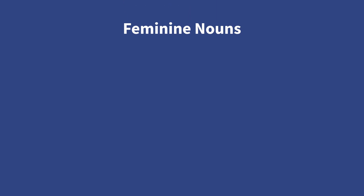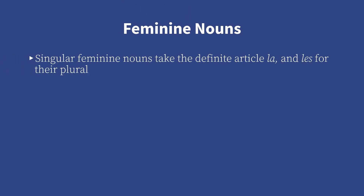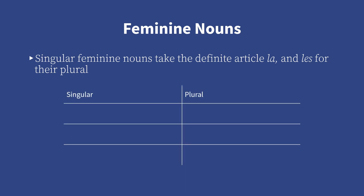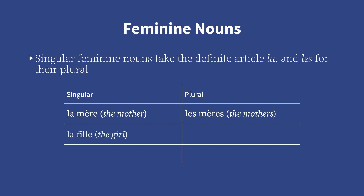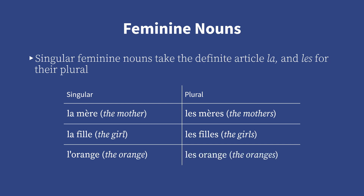Feminine nouns. Singular feminine nouns take the definite article la, and les for the plural. For example: la mère — the mother; les mères — the mothers; la fille — the girl; les filles — the girls; l'orange — the orange; les oranges — the oranges.